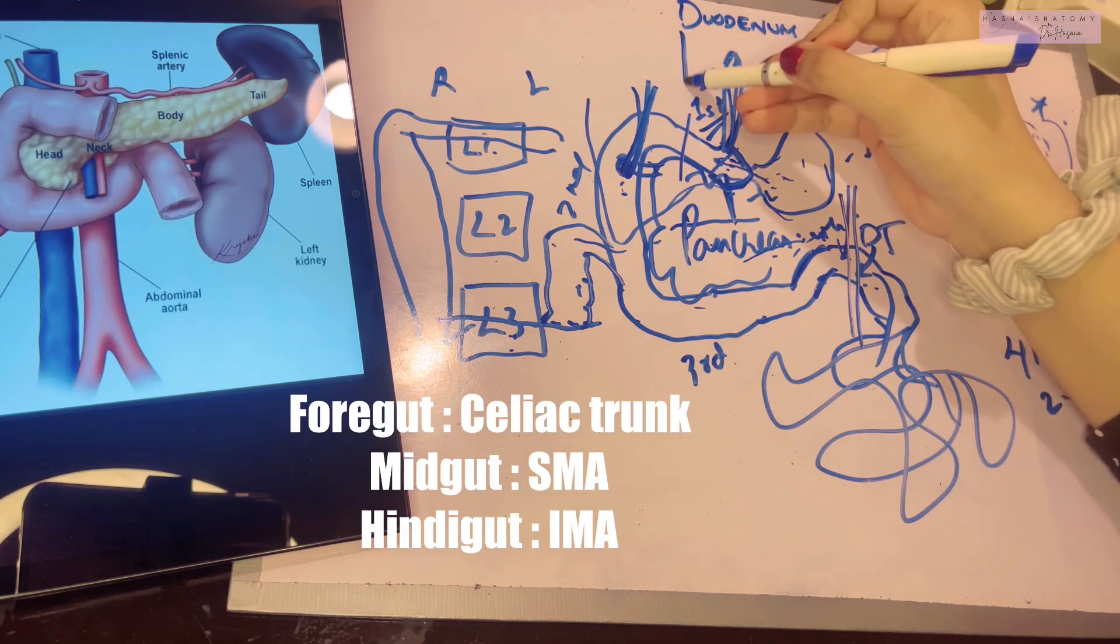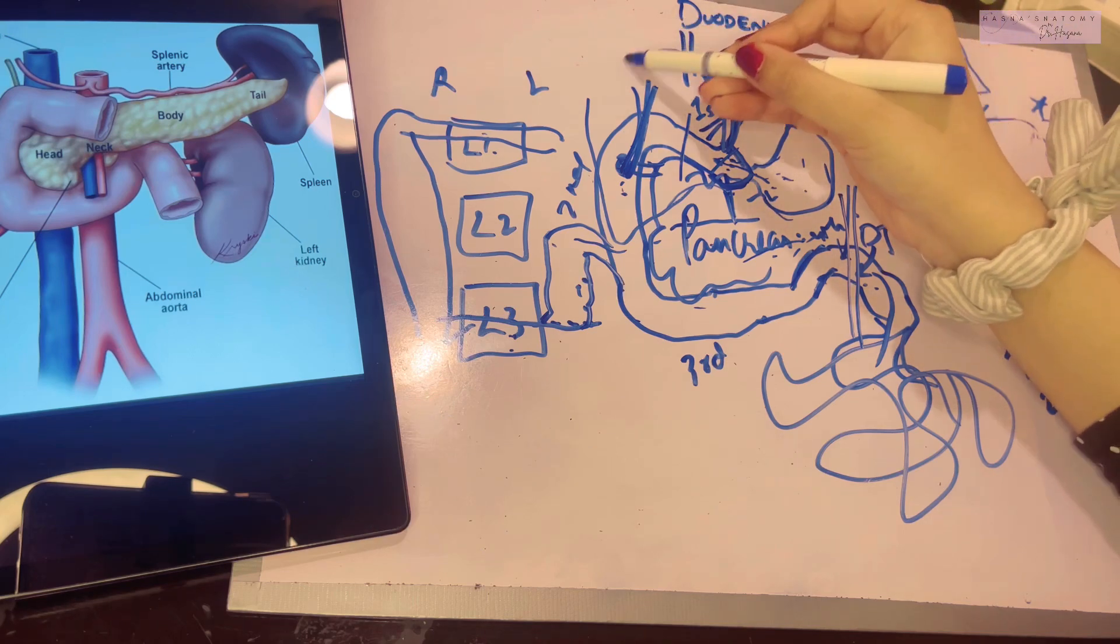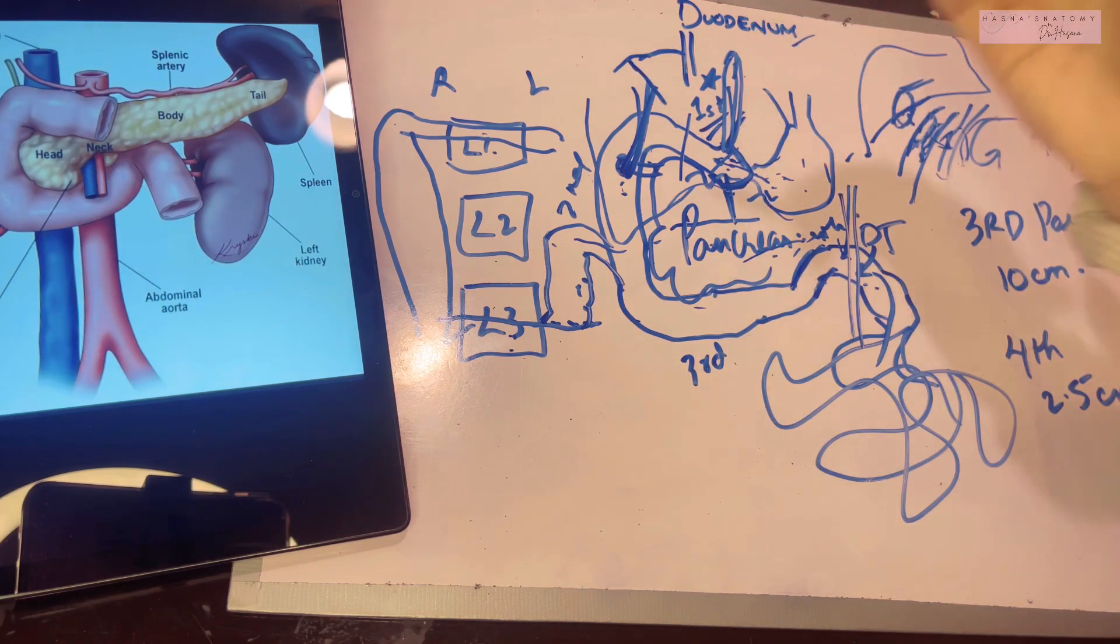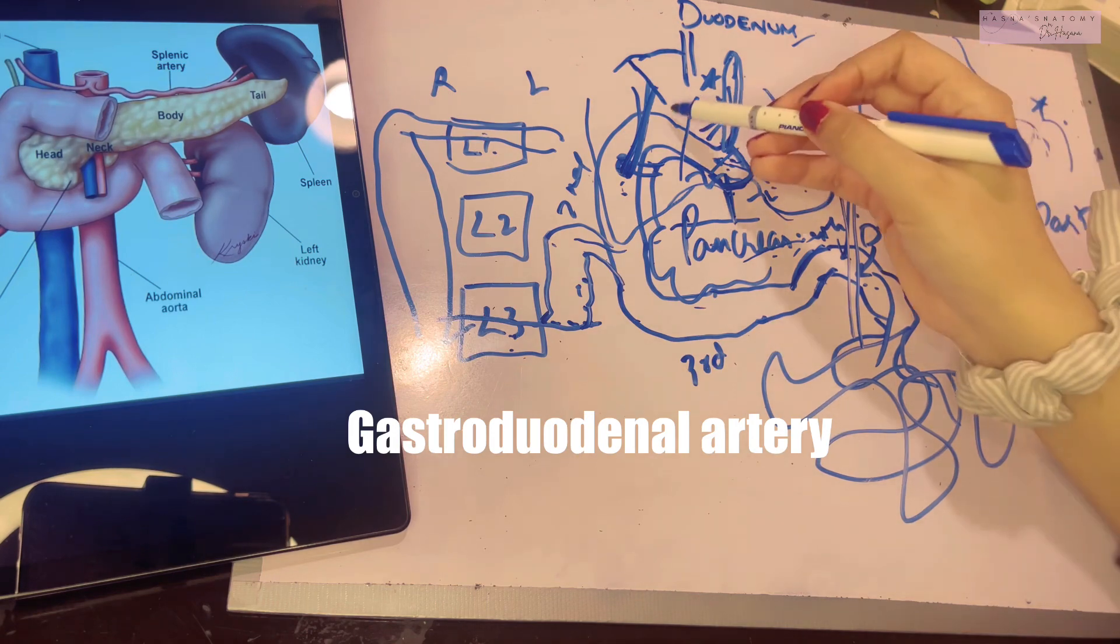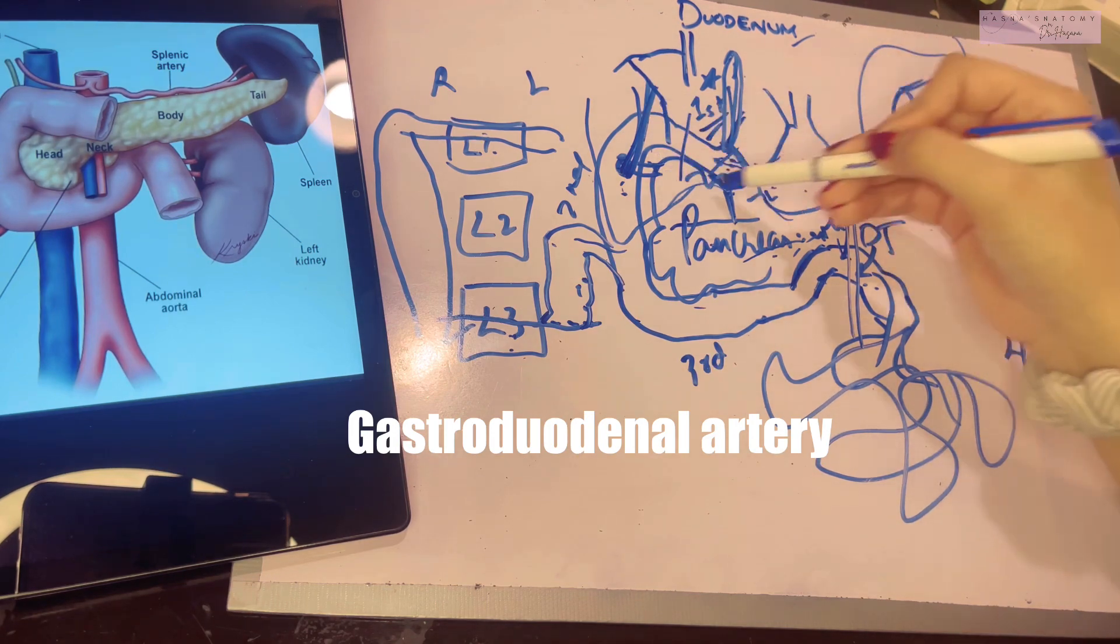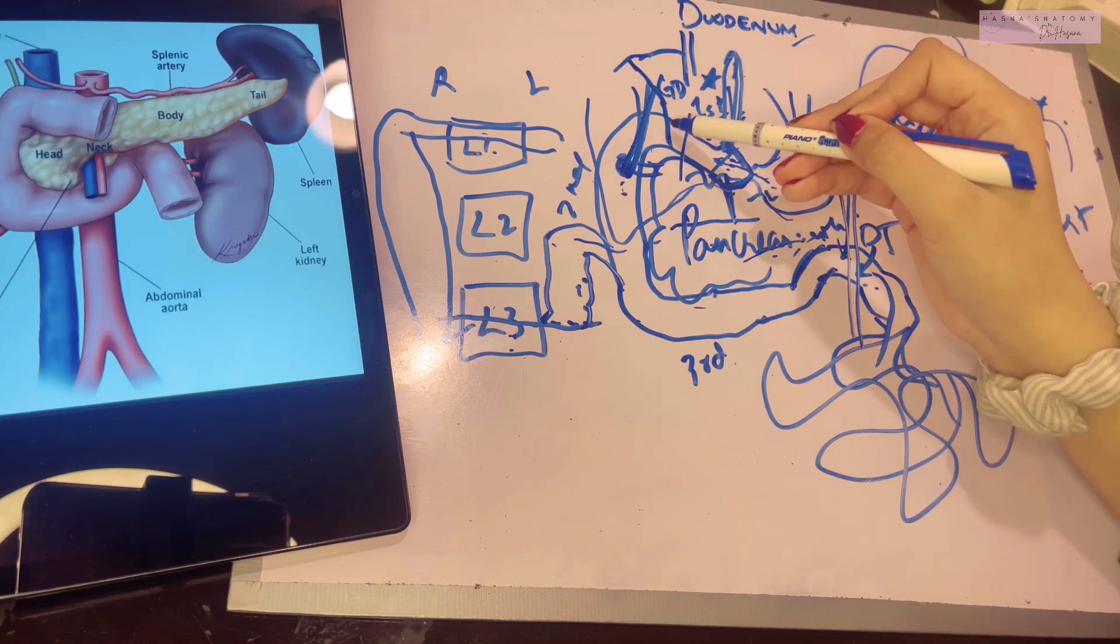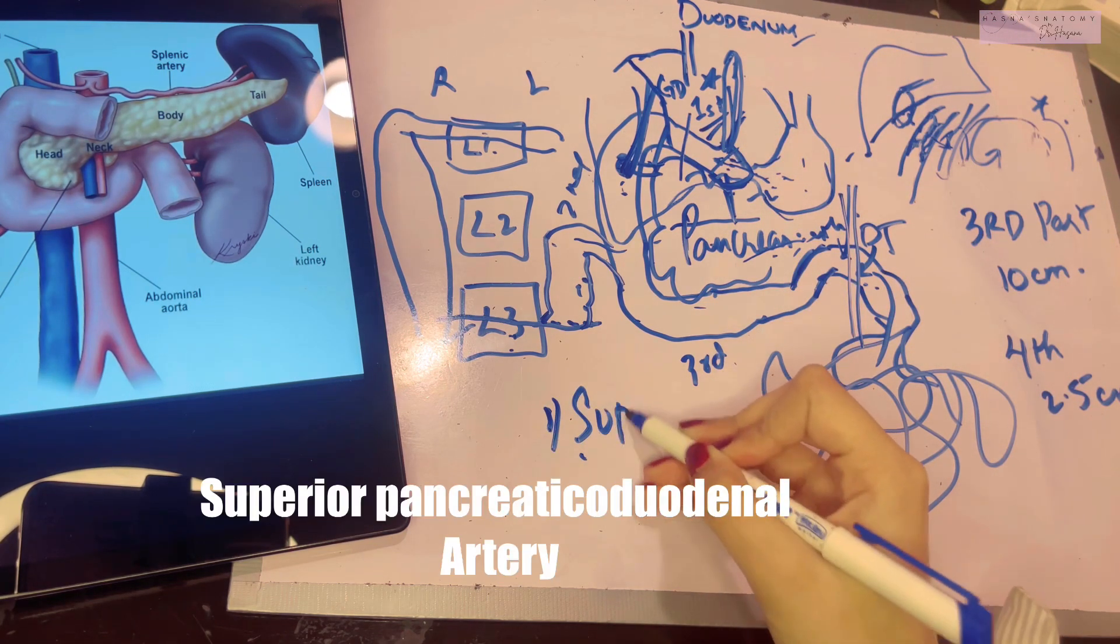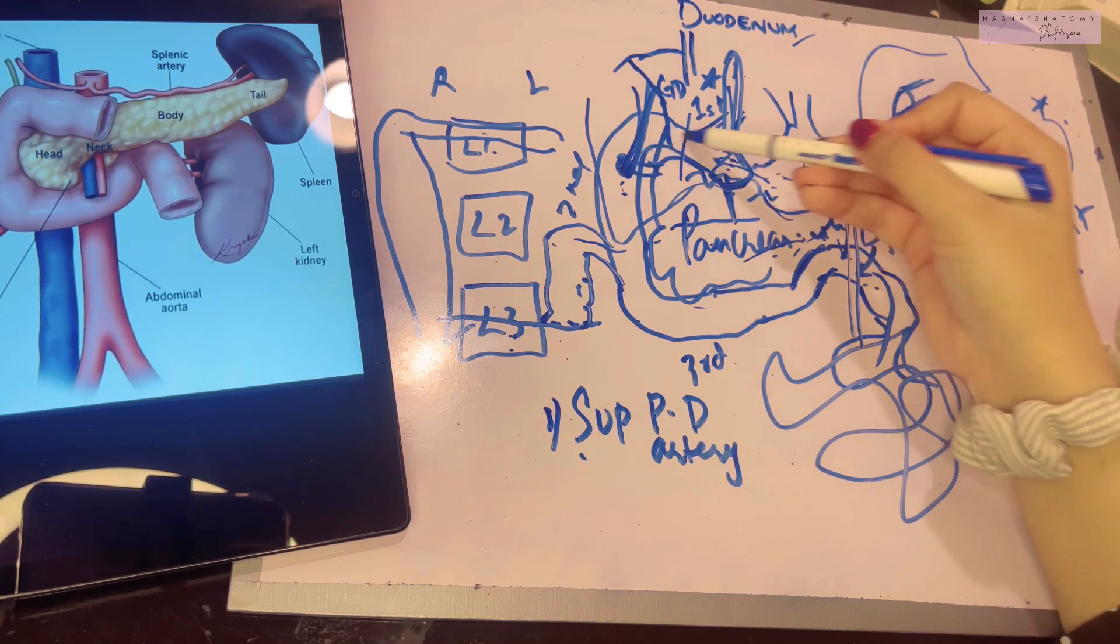The celiac trunk gives a branch, the common hepatic artery, which becomes the proper hepatic, and the celiac trunk gives this branch through its proper hepatic artery, the gastroduodenal artery. If you remember, it was lying posterior to the first part. This gastroduodenal artery, along with its branch called the superior pancreaticoduodenal artery, gives supply to the duodenum before the opening of the bile duct.